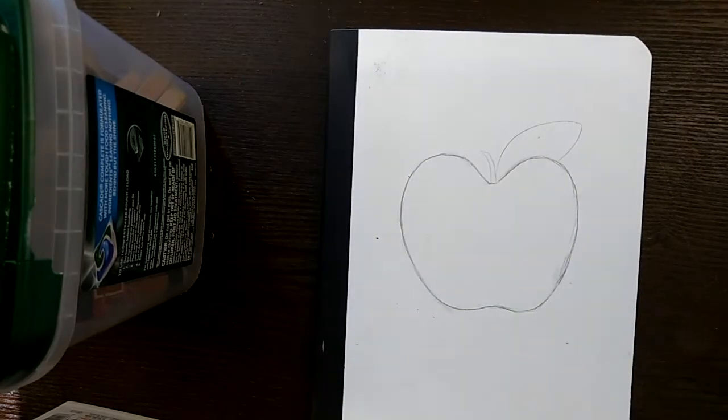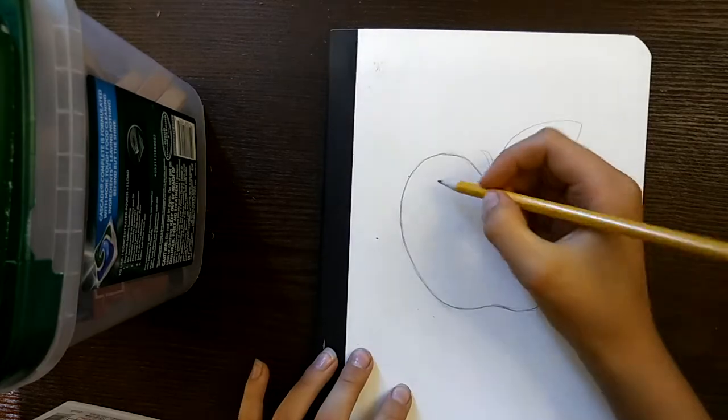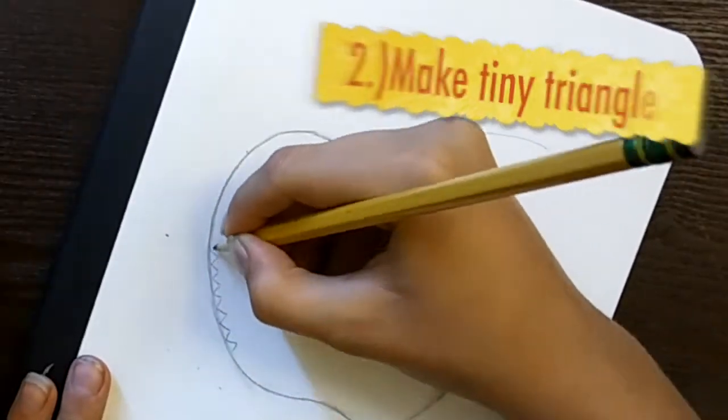To start the design, draw with your pencil little triangles at the inside edge of the apple. Also, go for adding dots in between each triangle.